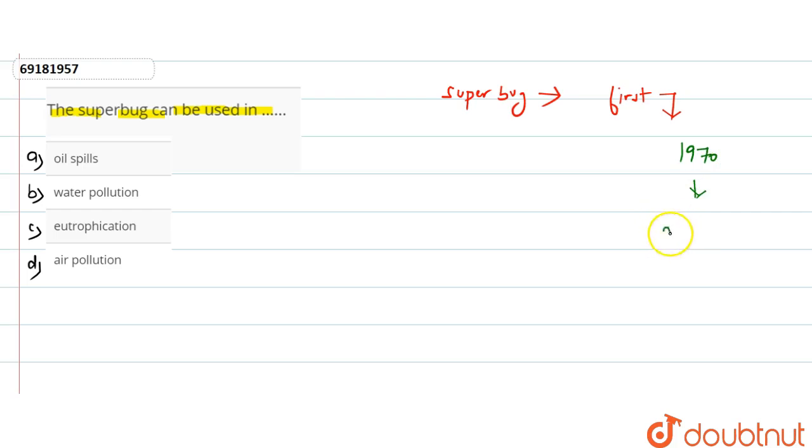1970 for purpose of degradation of oil, this superbug was produced by Chakraborty and co-workers. So, the main work of superbug was to help in oil spills which causes water pollution.